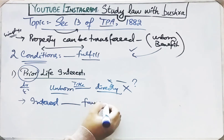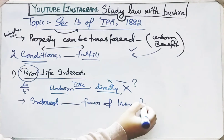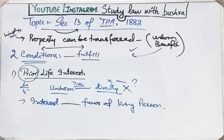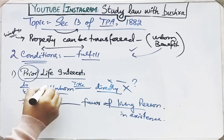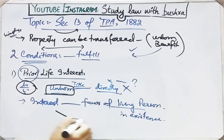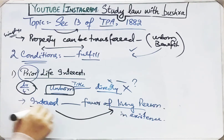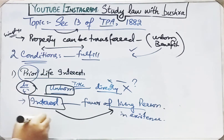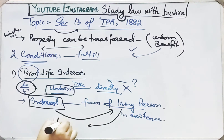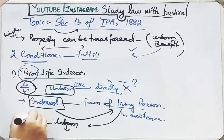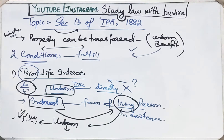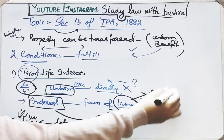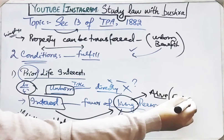So Section 13 says that to transfer property for the benefit of an unborn person, you must first create a life interest in the favor of a living person — someone who is in existence at the time of transfer. In favor of that living person you will create an interest, and after that you can transfer property to the unborn person. First it goes to the living person, then that living person will further transfer the property to the unborn person when they come into existence, i.e., when they are born. The interest created in the living person's favor is a lifetime interest — as long as that person is alive, they can enjoy the property. They have the right of enjoyment over that property.